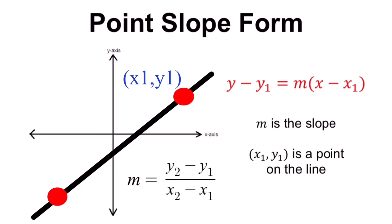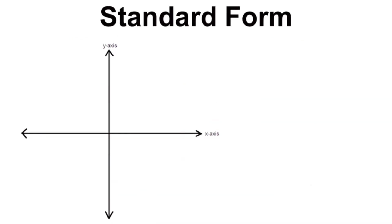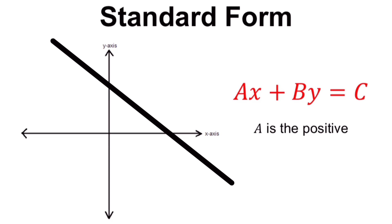We just have to pick which of those two points to use for y₁ and x₁ in the equation y equals mx plus b. Standard form has the formula ax plus by equals c. We remember that a should always be positive. This standard form is generally used to determine the x and y intercepts of a line, and we also use it in solving systems of equations.